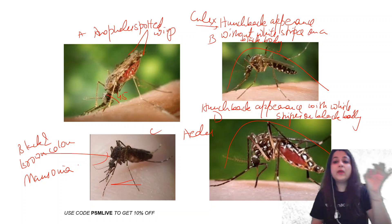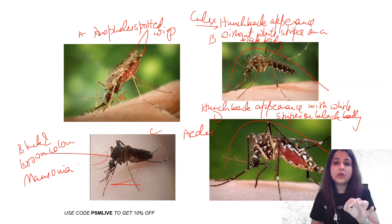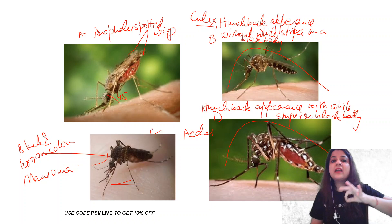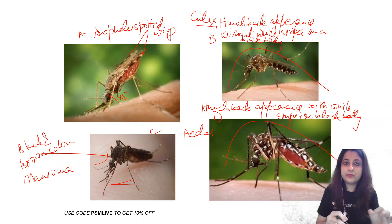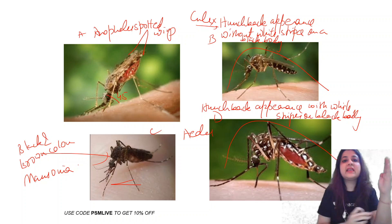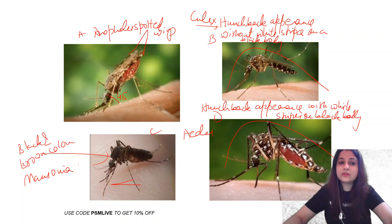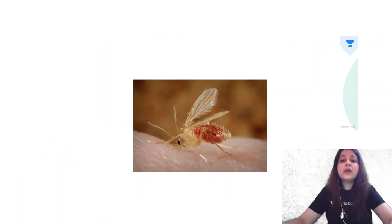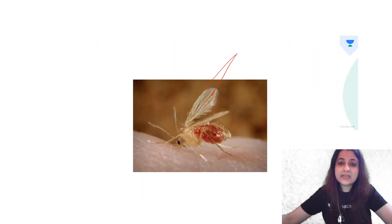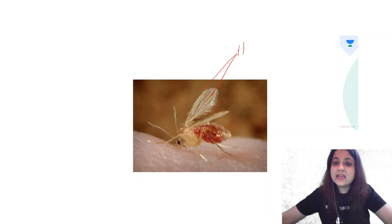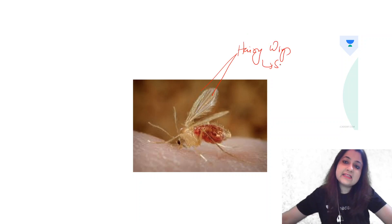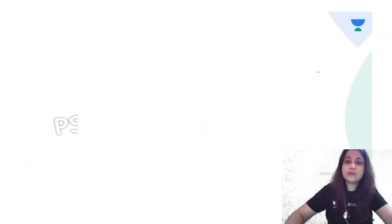To summarize: hunchback with white stripes on a black body is Aedes; hunchback without white stripes is Culex; 45-degree resting with spotted wings is Anopheles; black or brown with white shiny bristles on legs is Mansonia. Also, hairy wings are a feature of Sandfly.